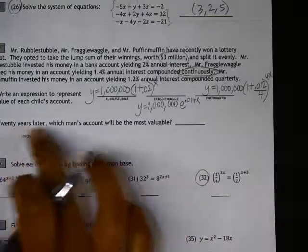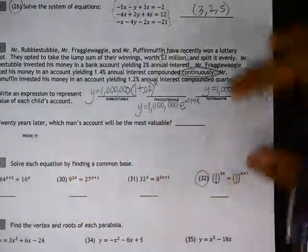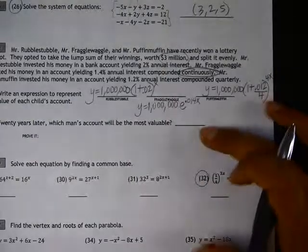And then if you're doing number 28, 20 years later, you would just have to plug 20 into X on each of these to calculate those values.